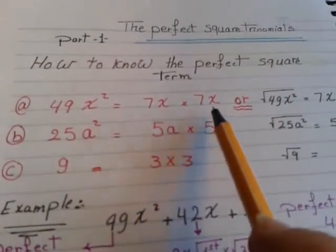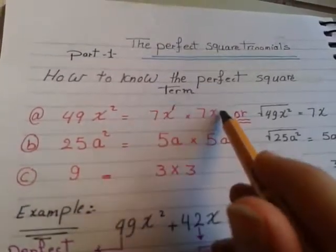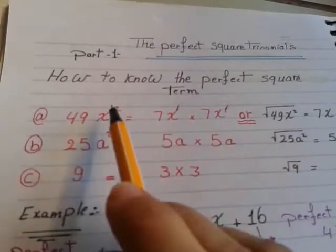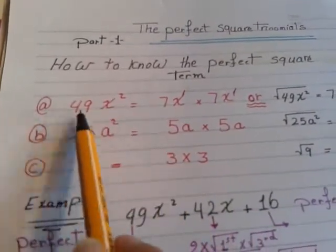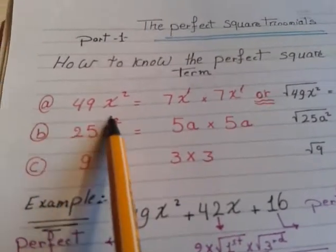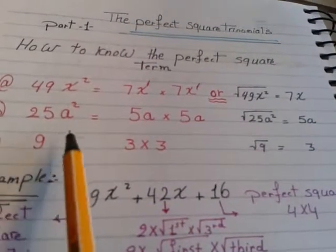And x time x equals x² because if this power 1, add the powers 1 and 1, both powers equals 2. So the root for 49 is 7x. So this is called perfect square term.